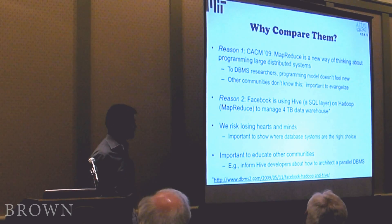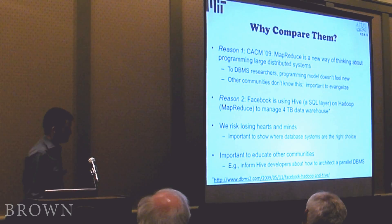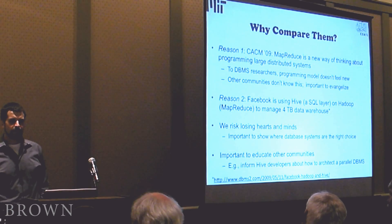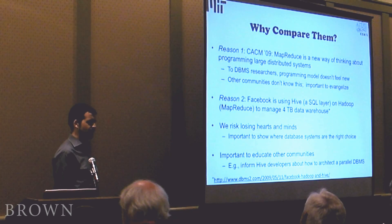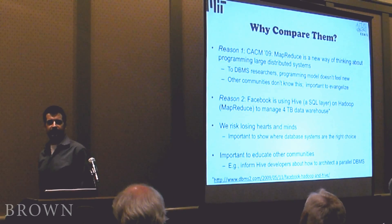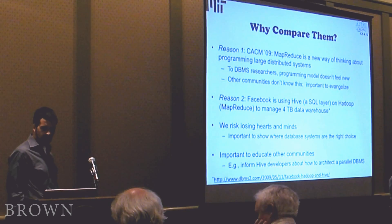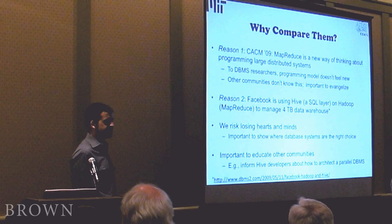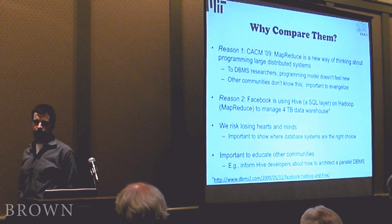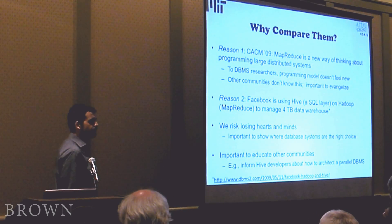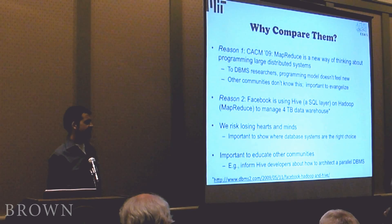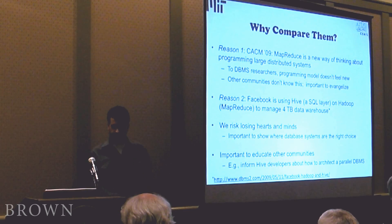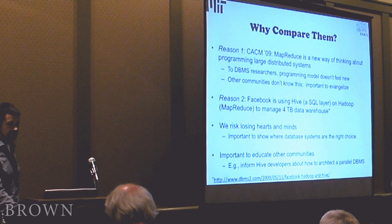Another anecdote: Facebook is using a system called Hive, which is basically a SQL layer that runs on top of the MapReduce framework to manage a four-terabyte data warehouse, as reported in this blog. Why is that a concern? Why didn't Facebook choose to use an existing commercial database package? What is it that they're giving up by choosing MapReduce instead? The real danger is that we risk losing the hearts and minds of a large set of potential users of parallel database systems. It's important to advocate where database systems are the right choice and to educate people like the developers of Hive about the technologies inside parallel database systems that really make a difference.